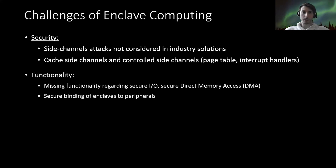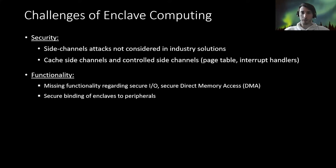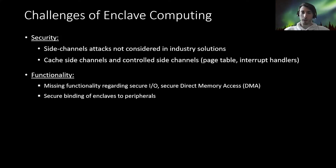The second aspect of challenges in enclave computing is missing functionality regarding secure IO or secure direct memory access. We call this a secure binding of enclaves to peripherals. This means we want to have secure IO — protecting the MMIO regions of a peripheral — and we also want to protect the enclaves from malicious direct memory access devices.